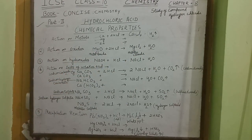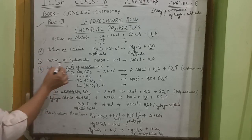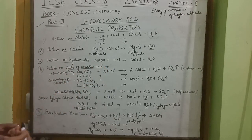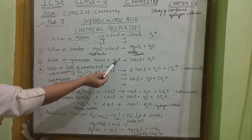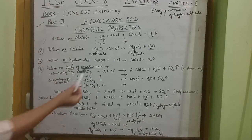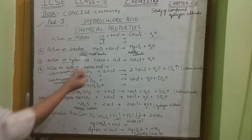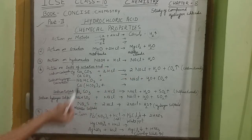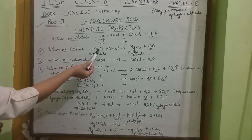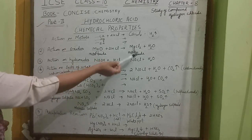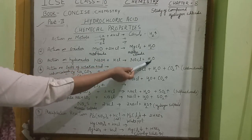The action on hydroxides: when hydrochloric acid is added to a metallic hydroxide like sodium hydroxide, it forms metallic chloride and water. In both cases — whether it is a metallic oxide or a metallic hydroxide — the products are metallic chloride and water.